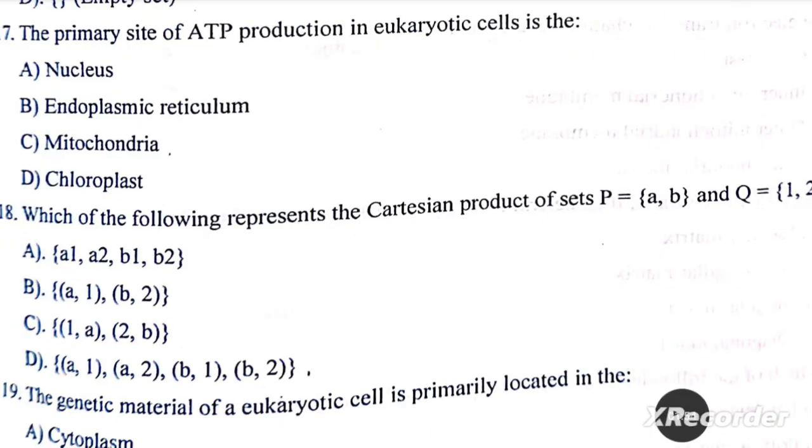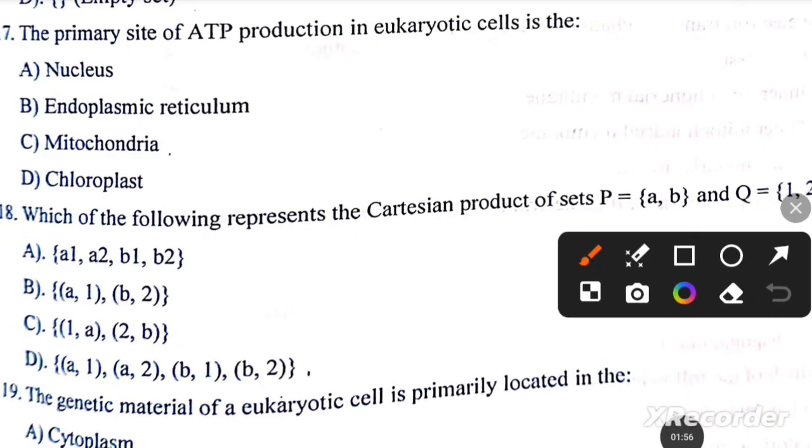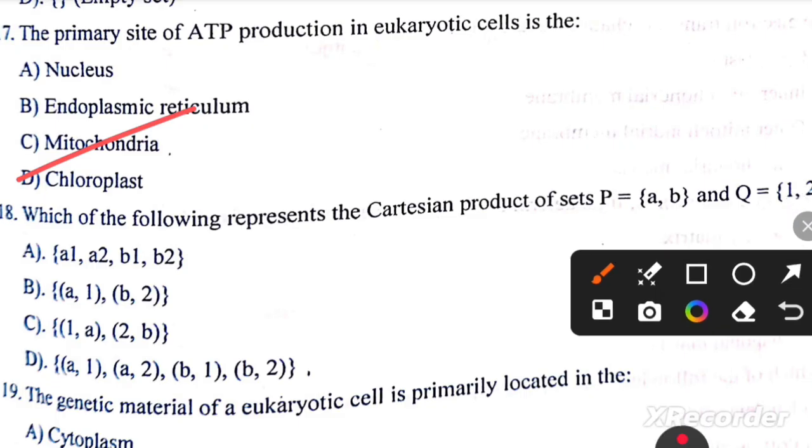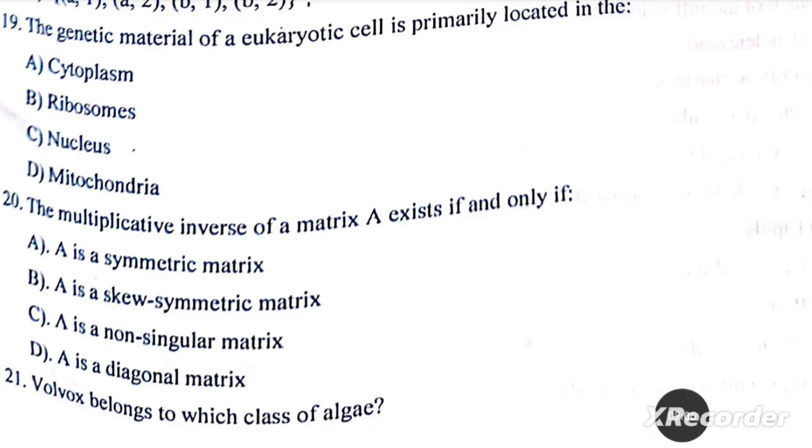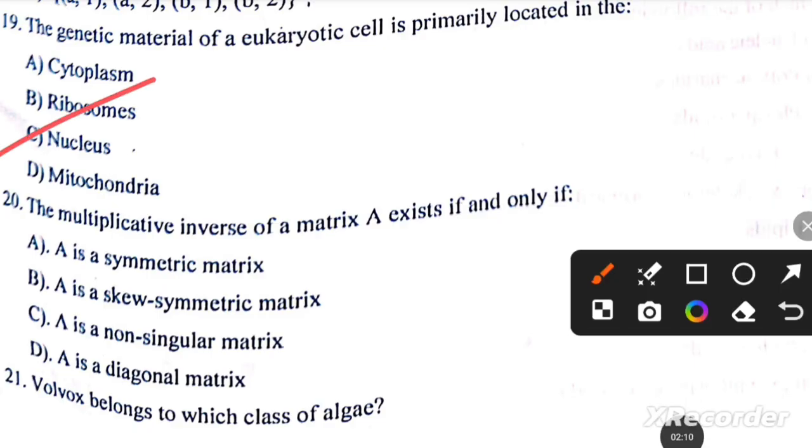The primary site of ATP production in eukaryotic cells is the mitochondria. Which of the following represents the Cartesian product of sets P and Q? The answer is option B. The genetic material of eukaryotic cells is primarily located in the nucleus. The multiplicative inverse of a matrix A exists only if A is a non-singular matrix.